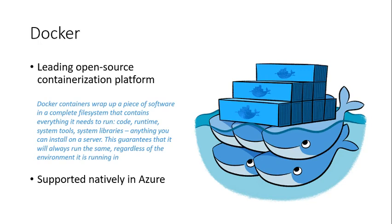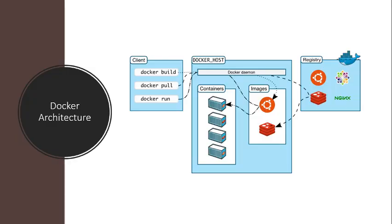Moreover, Docker containers are easily moved between Azure and Amazon Web Services, offering durable portability between clouds. Docker utilizes a client-server architecture. You execute Docker commands through a Docker client, such as the Docker CLI. The client uses REST commands to communicate with the Docker daemon running on a Docker host such as Azure Container Services. These commands can be used to push, pull, and create Docker images to run them in containers, and to manage those containers.